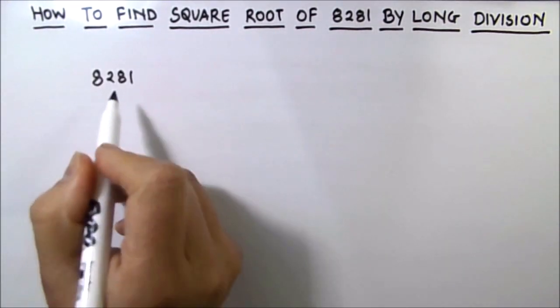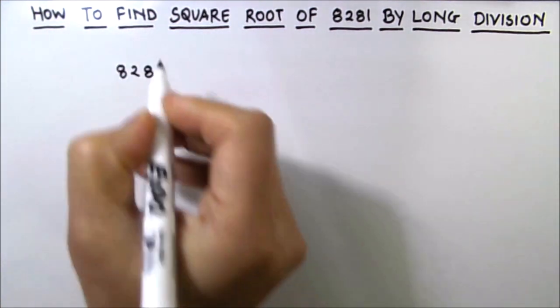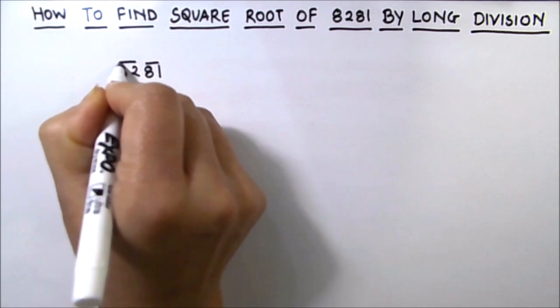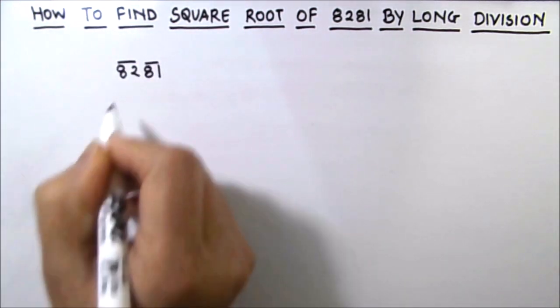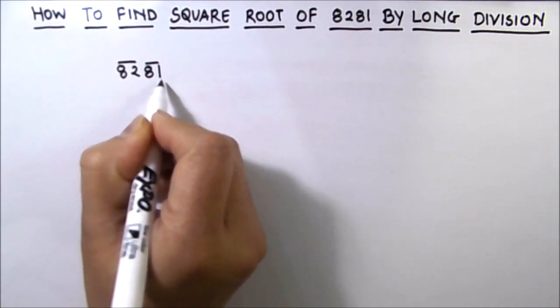In this method, the first step is to write the number and make pairs of numbers starting from the units digit. Here we have one group as 1 and 8 and the other group as 28. So we have our first group from the left as 82 and the second group as 81.